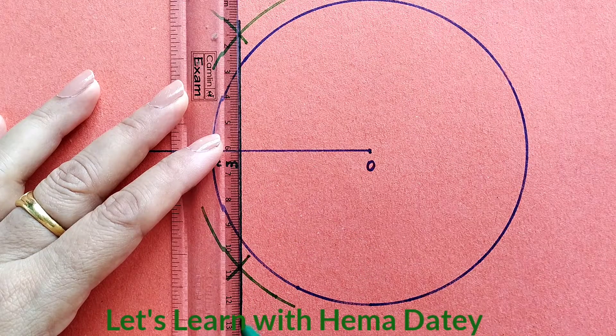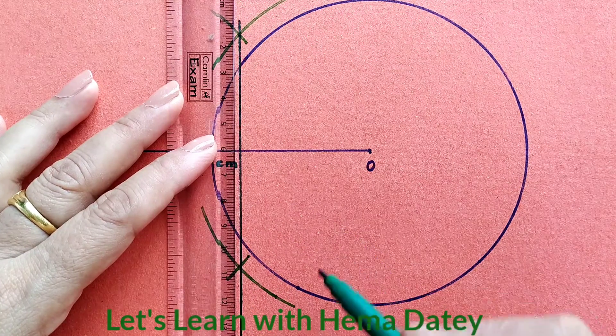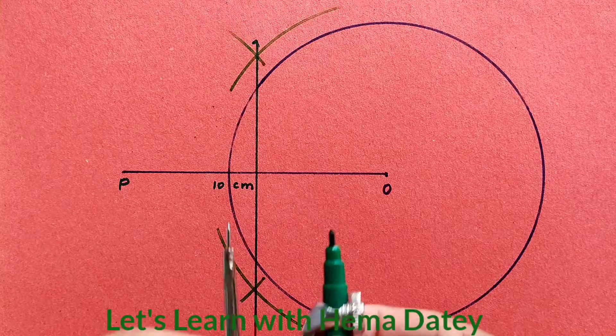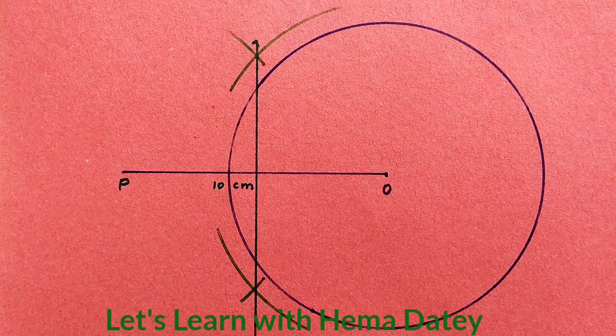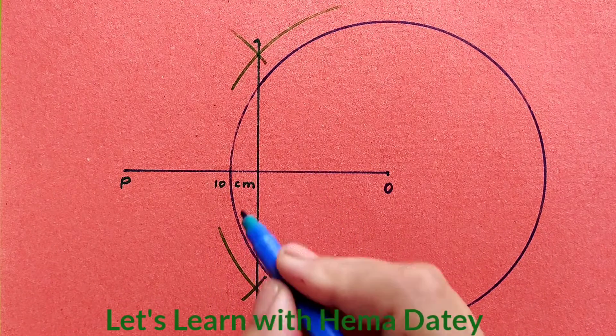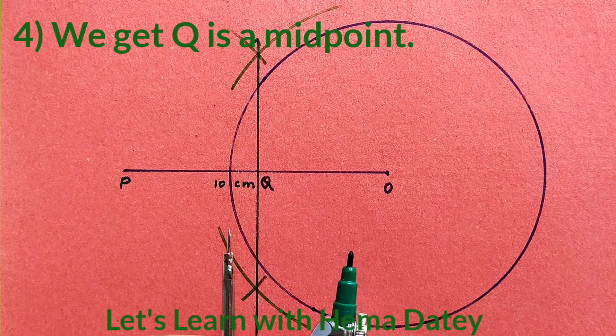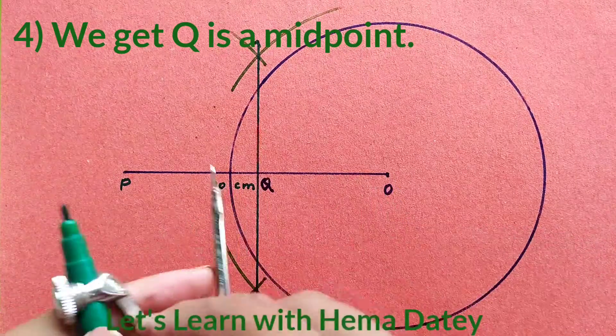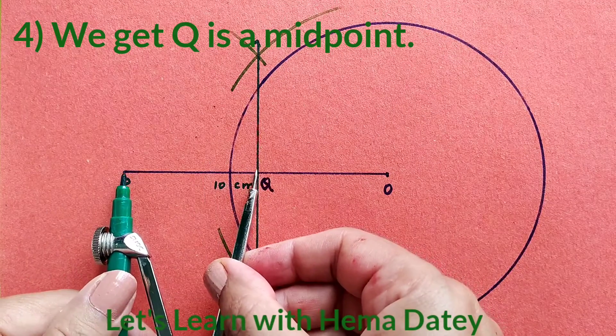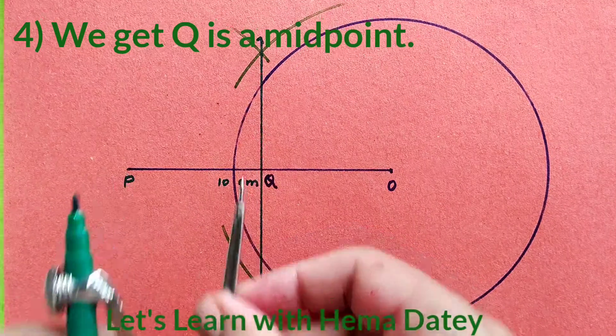We will also get the midpoint of OP. Let's name the midpoint of OP. This is the midpoint of OP and we are naming it Q. You can see Q is the midpoint so PQ and OQ are equal.